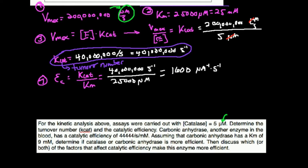Now for a conceptual question: assays were carried out with catalase concentration of 5 micromolar — determine the turnover number, kcat, and catalytic efficiency. We just did that. Now: carbonic anhydrase, another enzyme in the blood, has a catalytic efficiency of 44,444 per second per millimolar. Assuming carbonic anhydrase has a Km of 9 millimolar, determine if catalase or carbonic anhydrase is more efficient. I first calculated in micromolar per second because I wanted us to have to do a conversion — and this is a very tricky conversion.